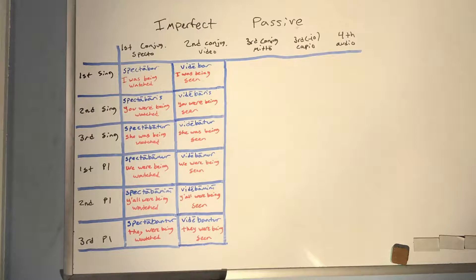Second conjugation imperfect passive with VIDEO: VIDEBAR (I was being seen), VIDEBARIS (you were being seen), VIDEBATUR (she was being seen), VIDEBAMUR (we were being seen), VIDEBAMINI (y'all were being seen), VIDEBANTUR (they were being seen).